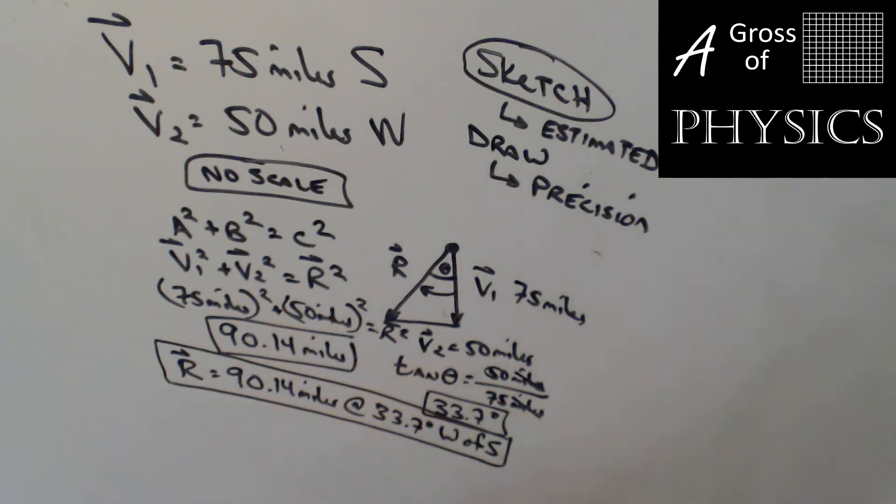Now we can compare that to what we got before graphically. And they should be close. It is possible that we did the complement of the 33.7, in which case it would be 90 minus 33.7, and that would get us 56.3 degrees. But that would have been the other direction, and it would be south of west. And both directions would be equivalent.